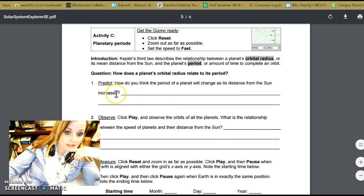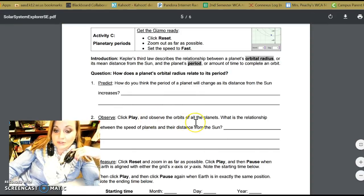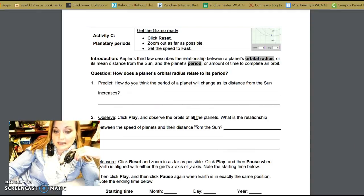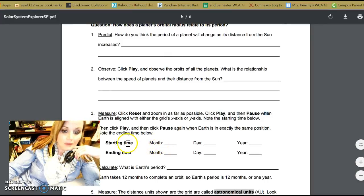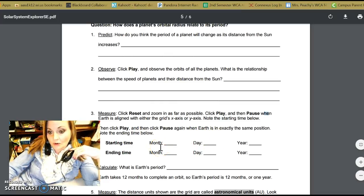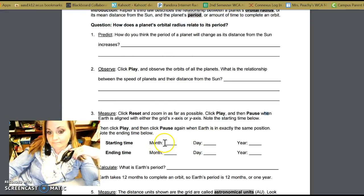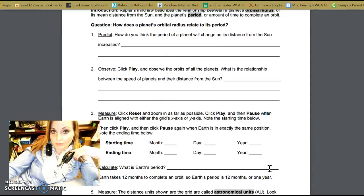So it talks to you, gives you some questions. It says how do you think the period of a planet will change as its distance from the Sun changes. That is your hypothesis, so please make sure you make that before you do any of the sim. And then it says click play and observe the orbits of all the planets, and then it's going to ask you to reset it and observe the orbit of Earth and kind of put where it starts and where it ends, and then write down the earth's period. Remember, period means time it takes to make one complete revolution.